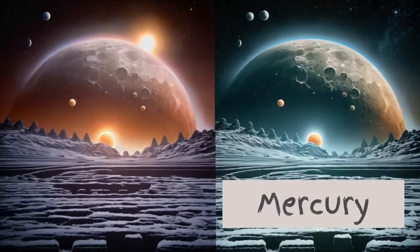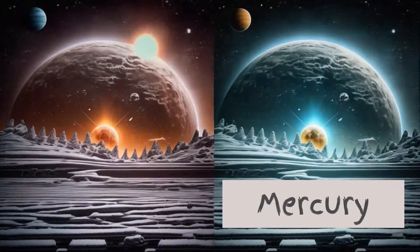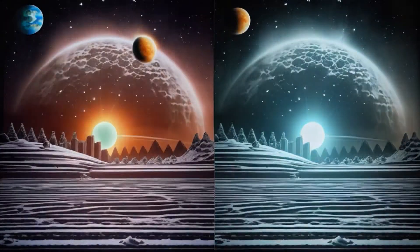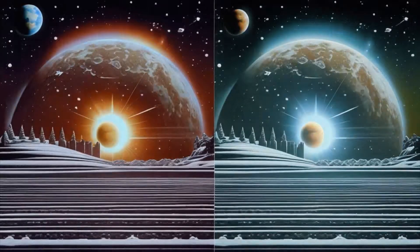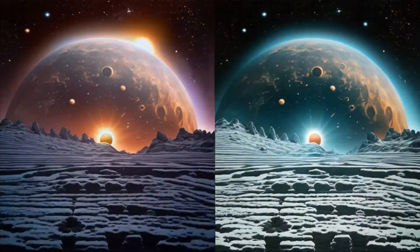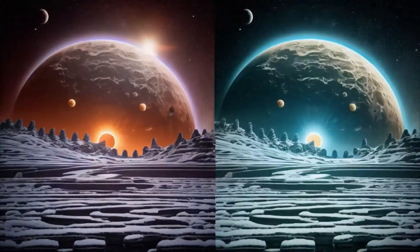Mercury, the closest to the scorching sun, is as small as a moon yet full of fun. It spins really slowly like a sleepy friend and has extreme temperatures from end to end.